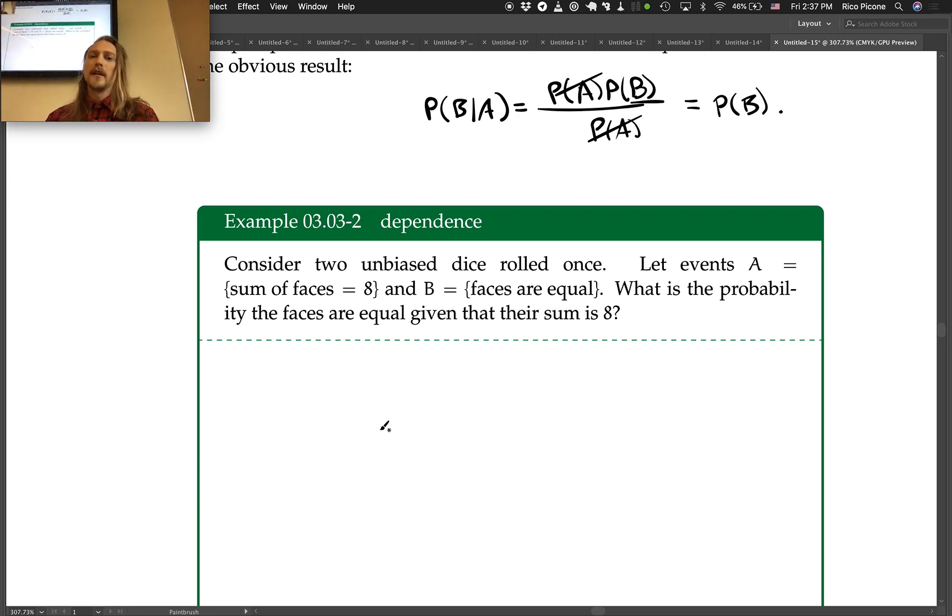...that the faces are equal given that their sum is 8? So this is the conditional probability of B (faces are equal) given that their sum is equal to A.